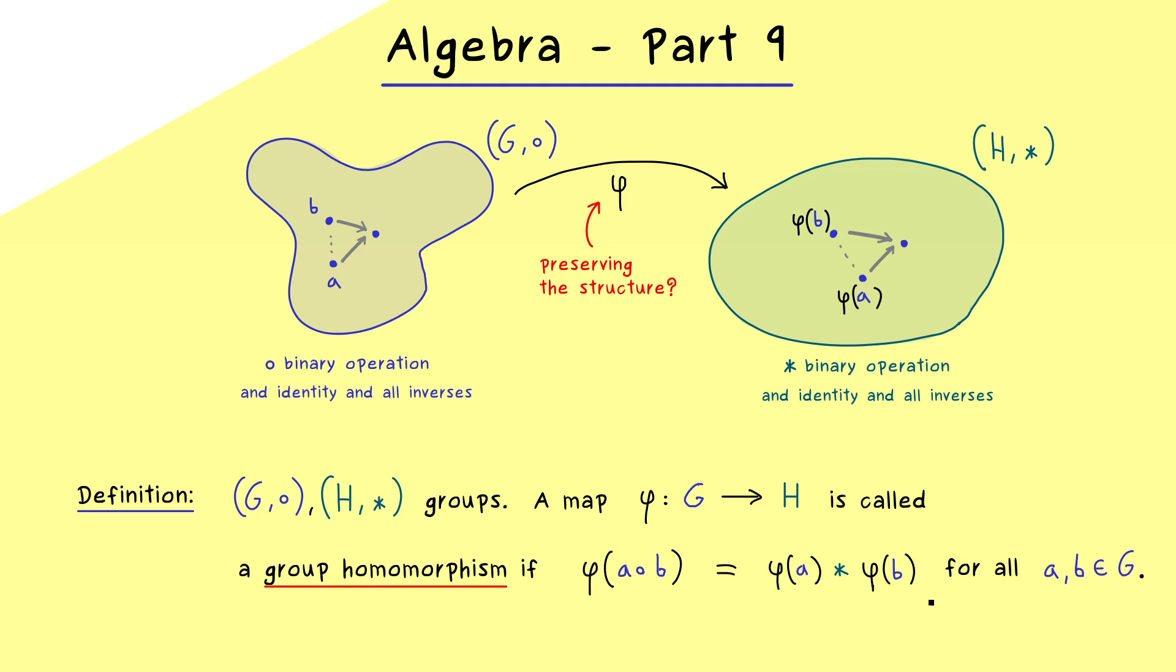In other words it does not matter if you first use the binary operation and then the map φ, or first the map φ and then the binary operation. And obviously we want to have this nice property for all a, b in G. So this is the definition of a group homomorphism. And now you see the only thing we require here is that the binary operation is preserved.